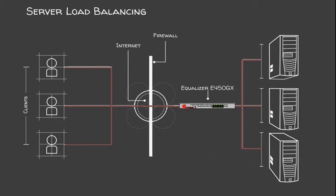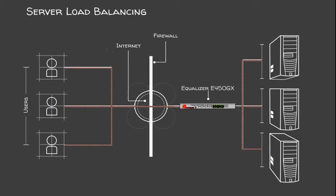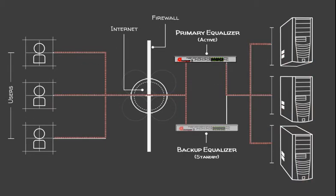Equalizers communicate with clients via a cluster on a VLAN and with servers via another VLAN. What would happen if for some reason the load balancer stops working? Clients and servers would no longer be able to communicate with one another and people would think your site was down. That's an undesirable situation to say the least.